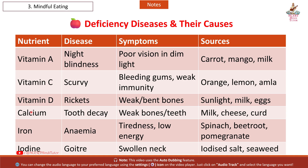Next nutrient: Vitamin D. Disease: Rickets. Symptoms: weak, bent bones. Sources: sunlight, milk, eggs.